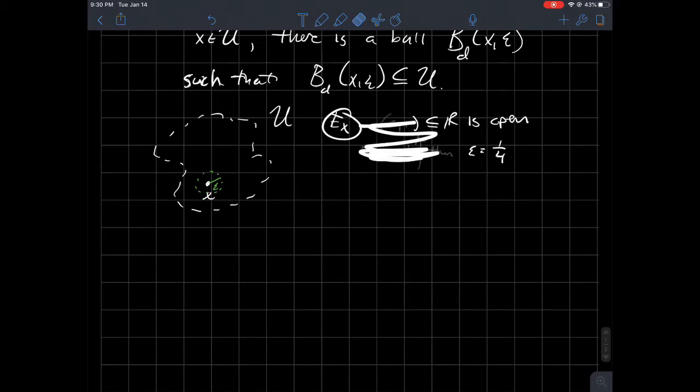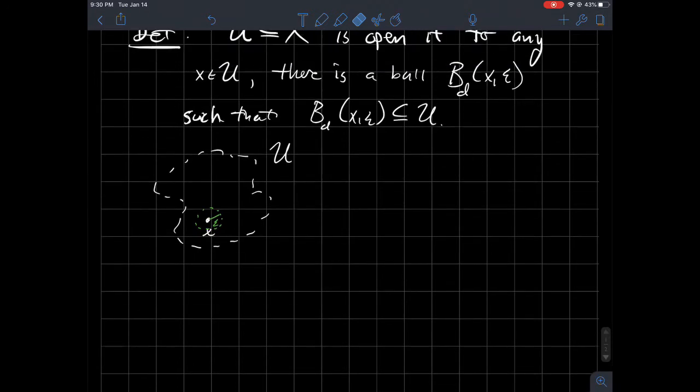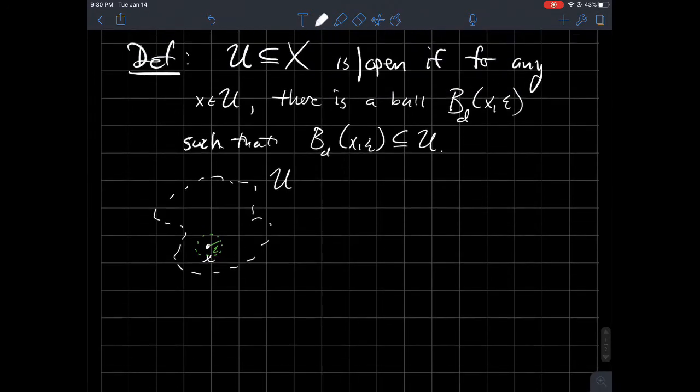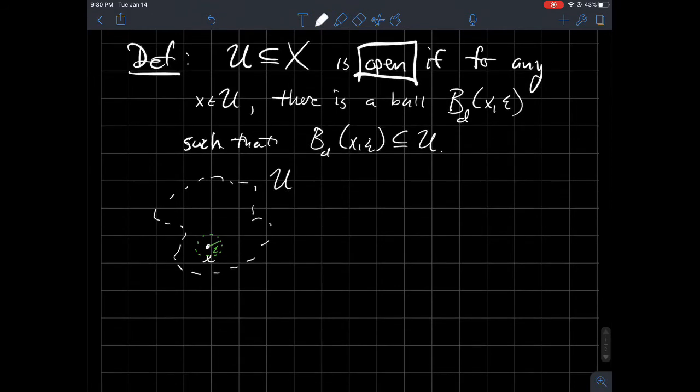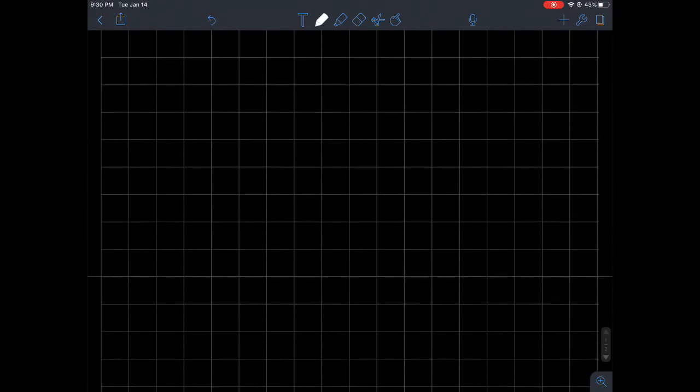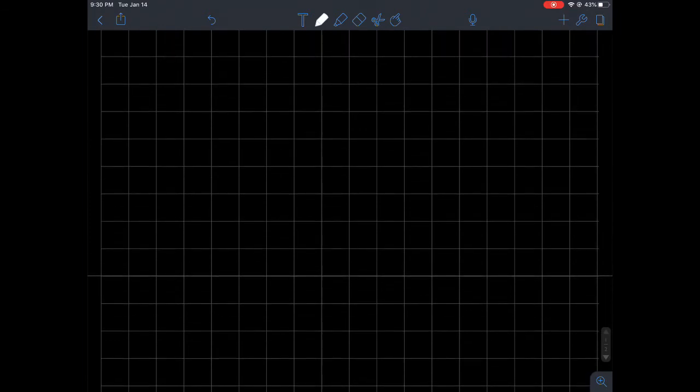Moving on from that, there are some - so we've got this word open now. So that is kind of the buzzword here. There are some properties that we always want to attach to this word open. And so what are some things we can expect about open sets in a metric space? And so some things we can expect, this would be like a theorem.